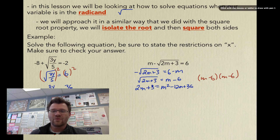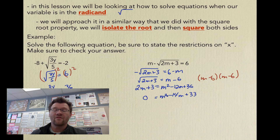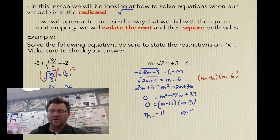We now have a quadratic, so we need to move everything to one side by subtracting 2m and subtracting 3. We now have something we can solve by factoring or the quadratic formula. I'll factor this one: the two numbers that multiply to give positive 33 and add to give negative 14 are negative 11 and negative 3, giving m equals positive 11 and m equals positive 3.